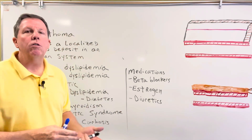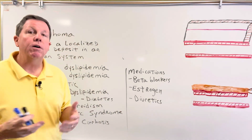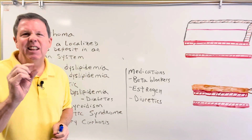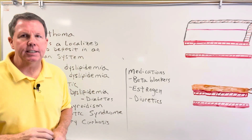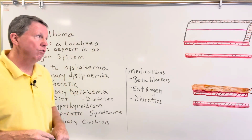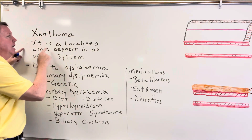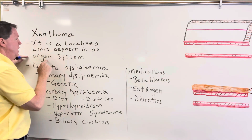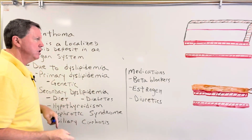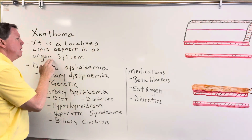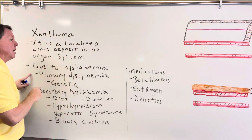Today we are going to be talking about xanthomas. So what are xanthomas? Basically they're like little yellow plaques that build up on the skin. It's a localized lipid deposit in an organ system. We're going to talk about the most common areas in just a few minutes, but basically you just get lipids building up and we'll talk about why.